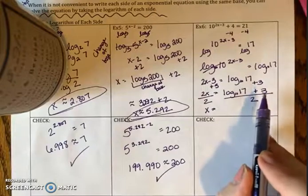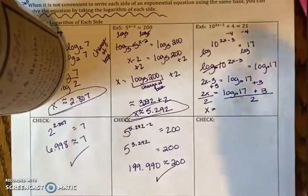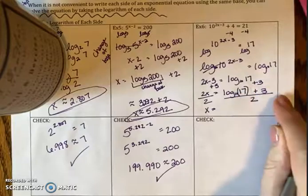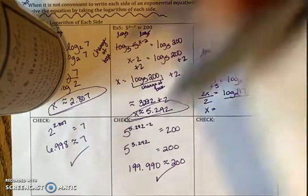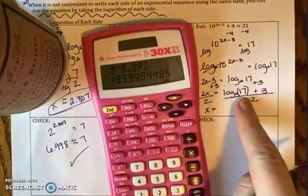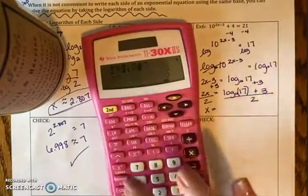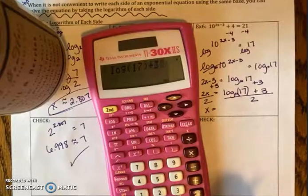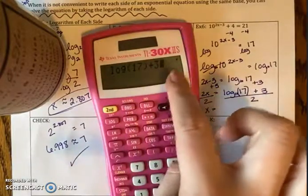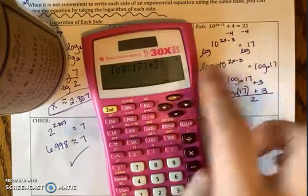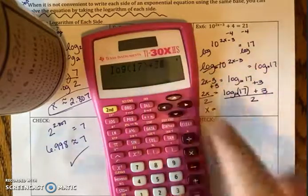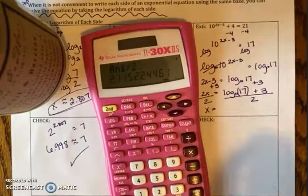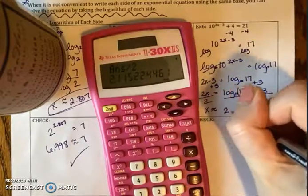You cannot combine the 17 and the 3 — we are taking the log of 17, not of 17 plus 3. So when you plug it into your calculator, enter log(17), close the parentheses, plus 3 — that's the whole numerator — then hit enter before dividing by 2, otherwise it would only divide the 3 by 2. Dividing by 2, I get approximately 2.115.